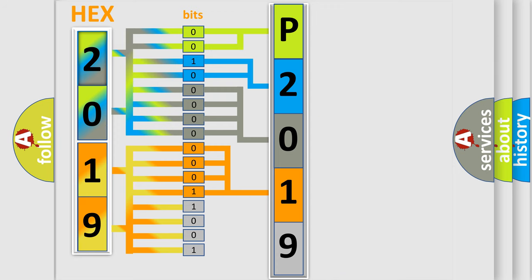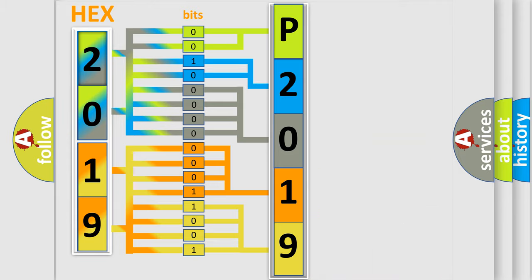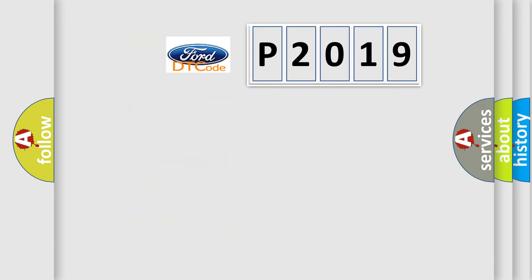A single byte conceals 256 possible combinations. We now know in what way the diagnostic tool translates the received information into a more comprehensible format. The number itself does not make sense to us if we cannot assign information about what it actually expresses. So, what does the Diagnostic Trouble Code P2019 interpret specifically?